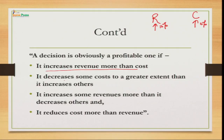Second point: if a decision decreases some costs to a greater extent than it increases others. In business there are different types of costs — fixed cost, variable cost, marginal cost, incremental cost. If the decision only impacts cost, with some decreasing and some increasing, but the percentage decrease in cost is more than the percentage increase, then ultimately the decision is profitable because your overall cost is decreasing.